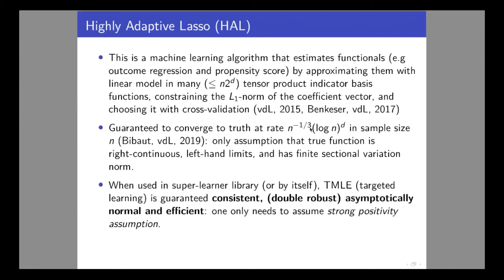When you use super learner, you're as good as your library — the best choice in your library. If your library has only poor algorithms, you're still not great. That's why you want to include a diverse set of algorithms ranging from parametric models to more and more aggressive approaches. You also want to include algorithms that are guaranteed to actually converge to the true function as sample size increases.